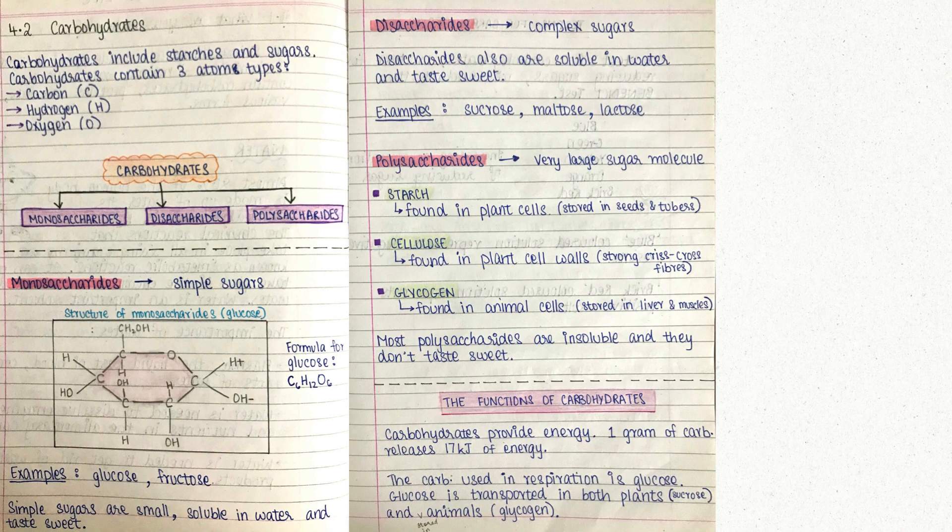Carbohydrates contain three elements: carbon, hydrogen and oxygen. Carbohydrates can be monosaccharides, disaccharides or polysaccharides. Monosaccharides means simple sugars. An example of monosaccharides is glucose and even fructose. These simple sugars are small, soluble in water and they taste sweet.